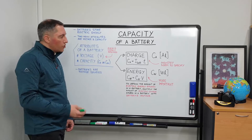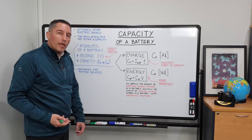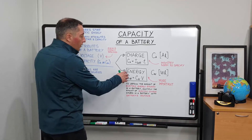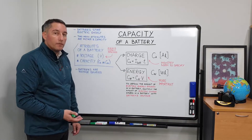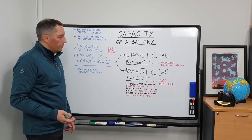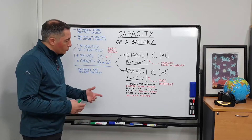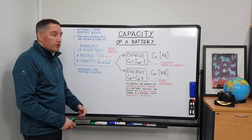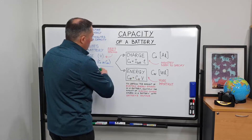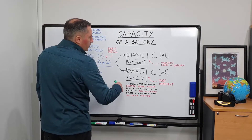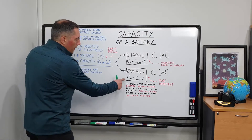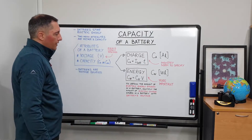Capacity of a battery expressed as charge stored is the industry norm and is normally specified on the battery label. However, capacity expressed as the amount of energy stored in the battery is more important — we are more interested in how much energy can be stored. To obtain the amount of electric energy stored, we need to multiply the electric charge by the battery's voltage. Since voltage is always clearly specified and charge capacity is also the norm, we can obtain energy simply by multiplying charge capacity (Ca) and voltage (V).